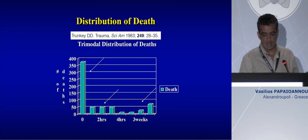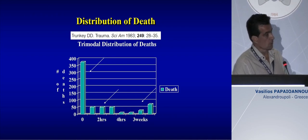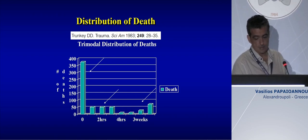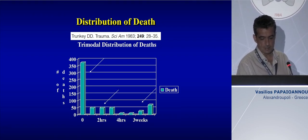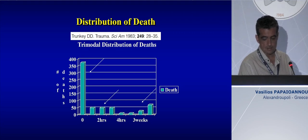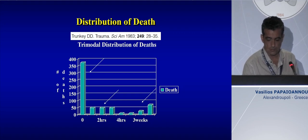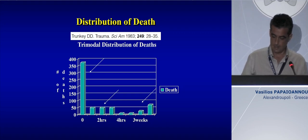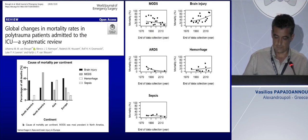This is the classic study published by Trunkey many years ago regarding the trimodal distribution of deaths in the ICU in multi-trauma patients. As you can see from the bar charts, the first hours are related to the trauma itself. The next two to three hours are majorly attributed to hemorrhage and hemorrhagic shock, whereas two to three weeks later, deaths are due to multiple organ failure and brain injury.